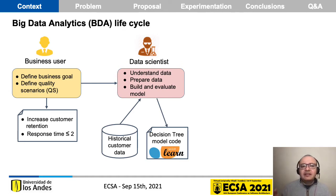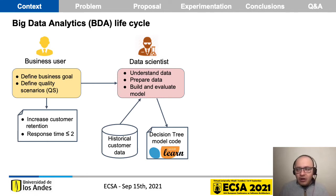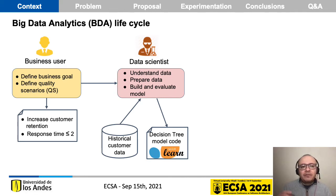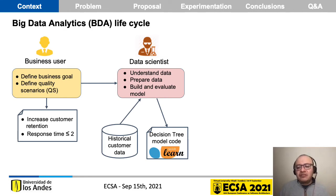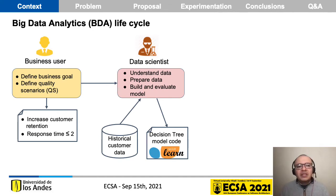In the second domain, in the analytics or data lab, the data scientist has to understand the data — basically the user historical data regarding calls and use of data services — and then has to prepare the data, transform it, and build models in order to choose the best model to predict customer retention. The data scientist selects, for example, a decision tree model, using traditional tools in the data lab such as Scikit-learn or R, in order to build code to be deployed in a production environment.